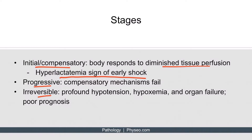Hyperlactatemia occurs because of lactic acid production due to tissue hypoxia. The tissues are starved for oxygen and start to utilize anaerobic metabolism, producing lactic acid. As the patient progresses through the stages of shock, this oxygen starvation gets progressively worse and lactic acid levels become higher and higher. But since lactic acid is produced pretty early on in shock, it's a useful clinical sign to look at to catch it in the initial stage.